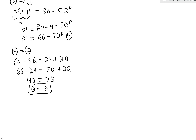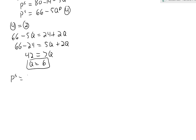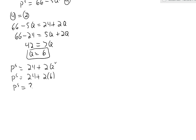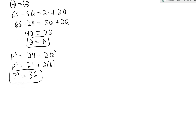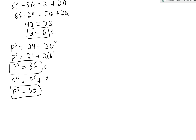Now we find PS and PB. PS equals 24 plus 2Q star equals 24 plus 2 times 6, so PS equals 36. Using our third equation, PB equals PS plus 14, so PB equals 50. With the tax: quantity is 6 million liters, sellers receive 36 cents per liter, buyers pay 50 cents per liter, and the government collects the 14 cent difference.